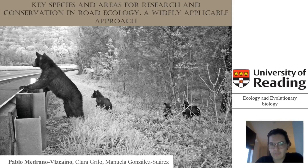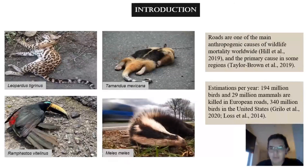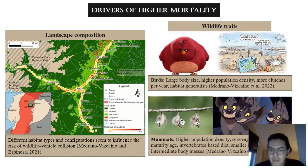Here we identify key species and areas for research and conservation in road ecology. Roads are one of the main anthropogenic causes of wildlife mortality on the planet. It's estimated that 194 million birds and 29 million mammals are killed on European roads, while 340 million birds in the United States. However, mortality is different across regions and taxa, and different landscape features and configurations can lead to higher mortality rates.